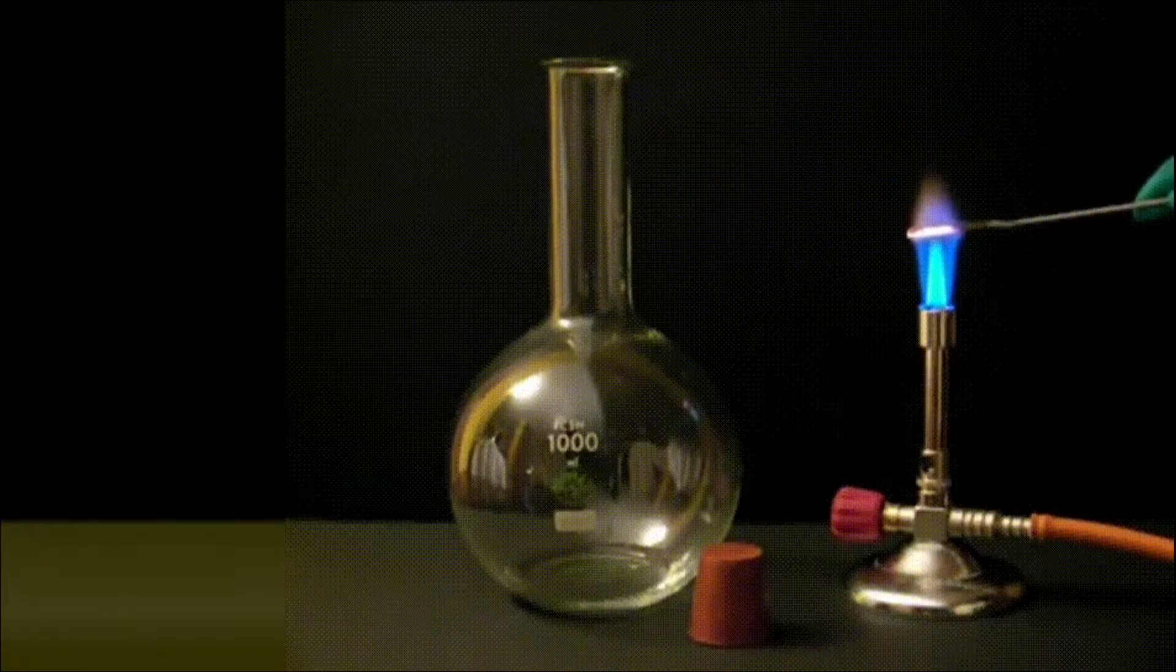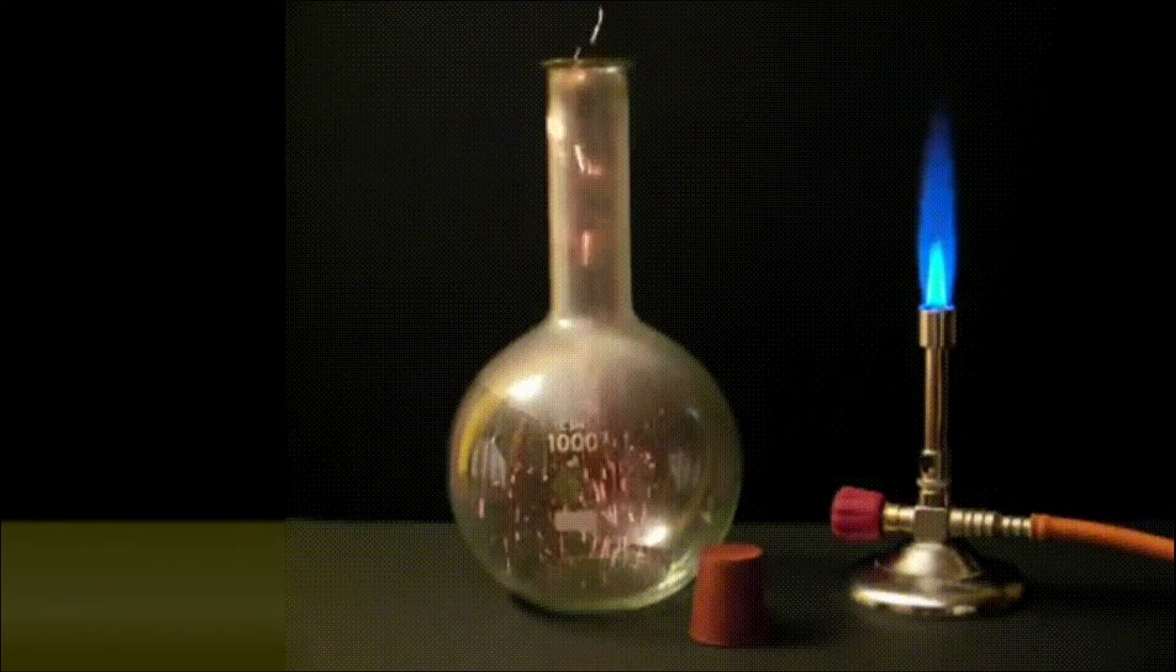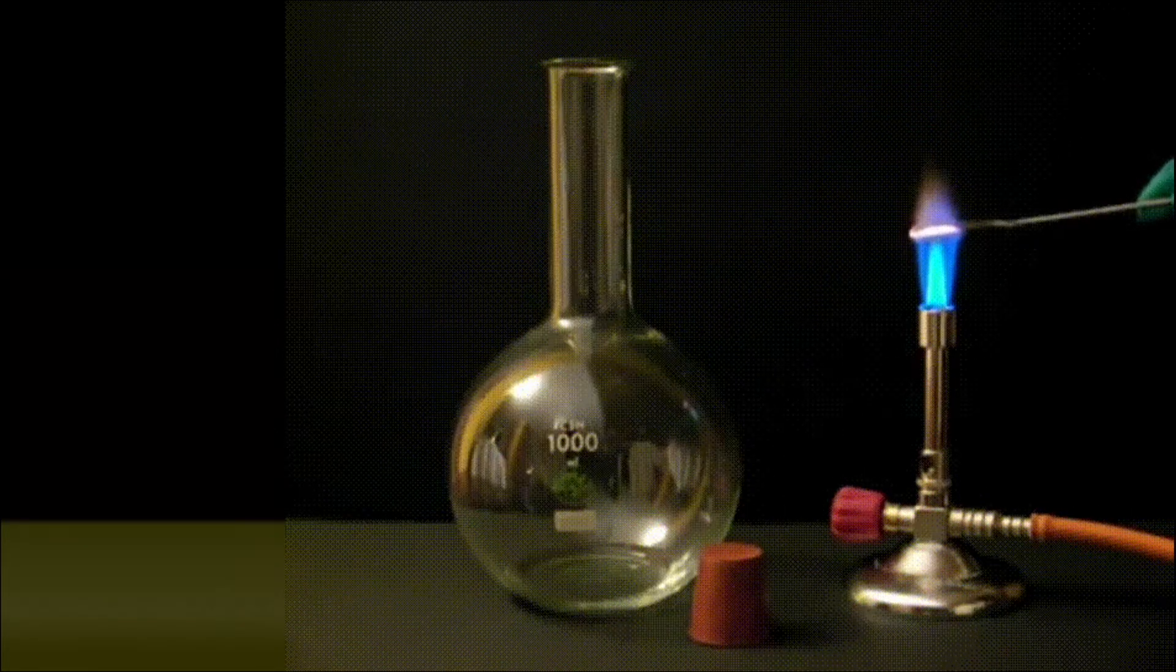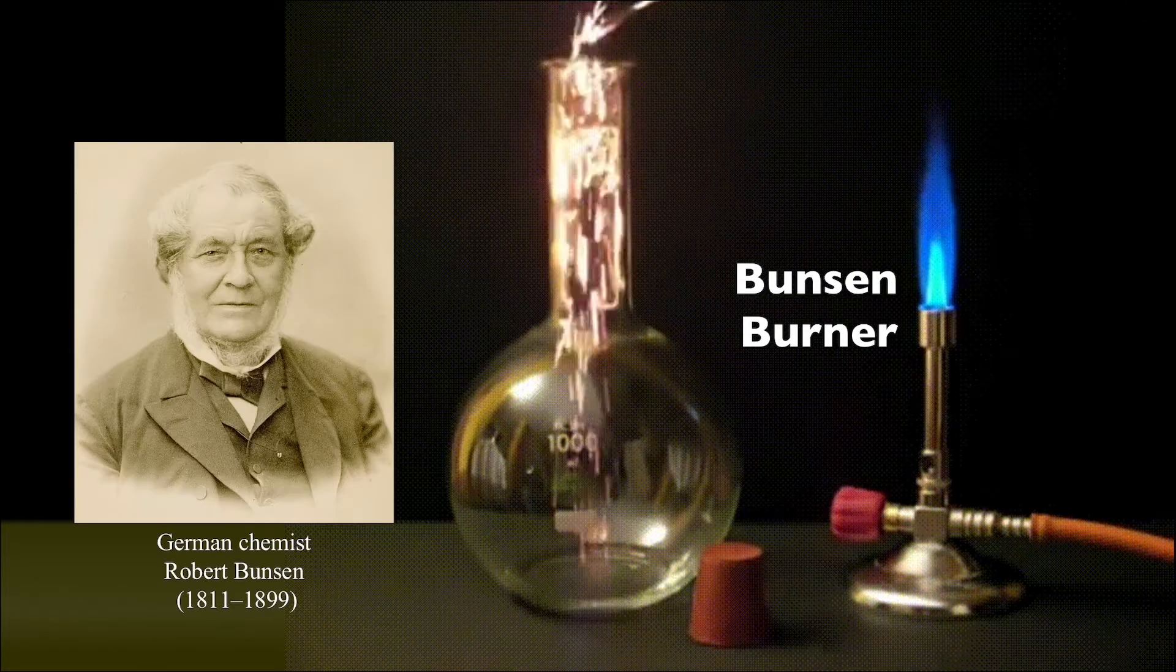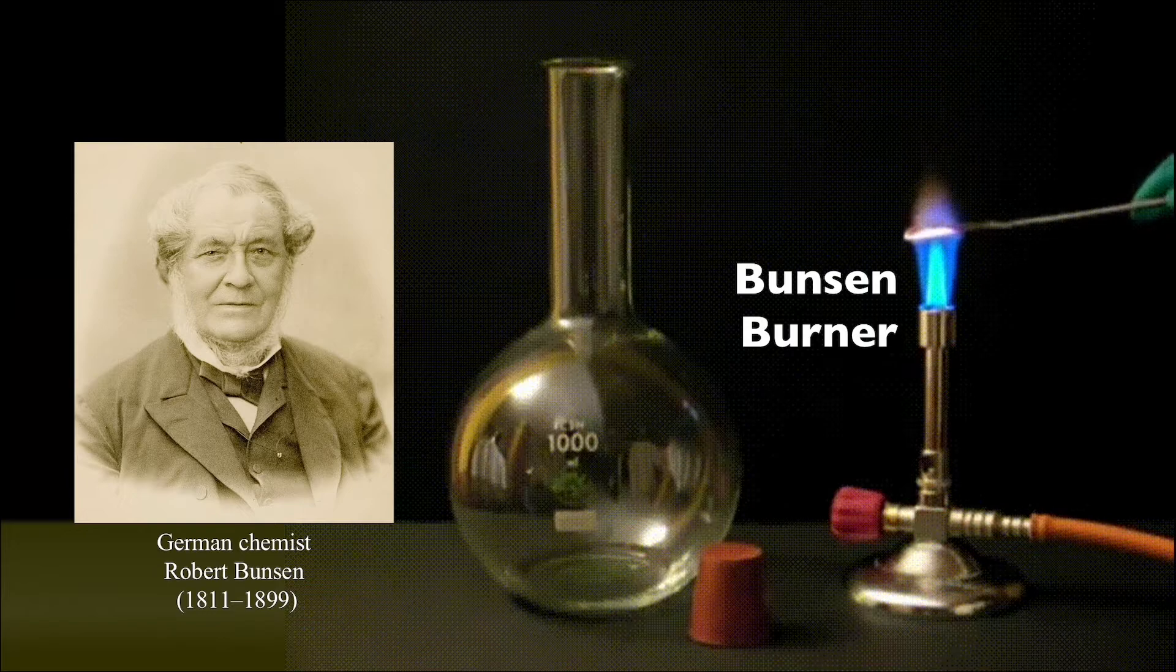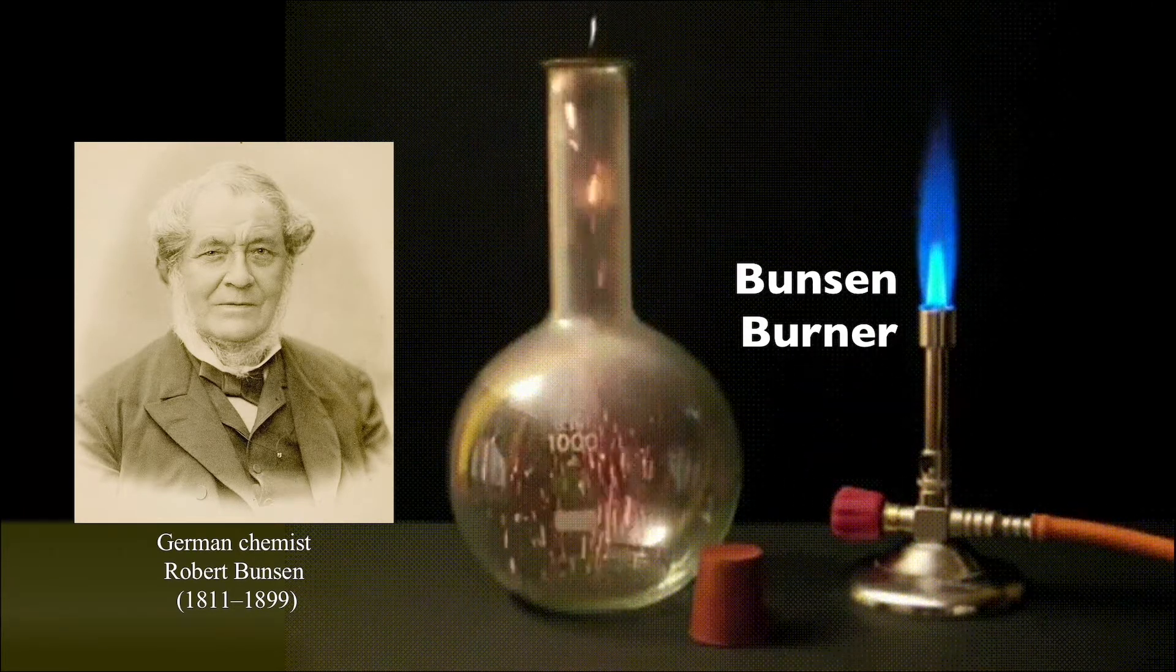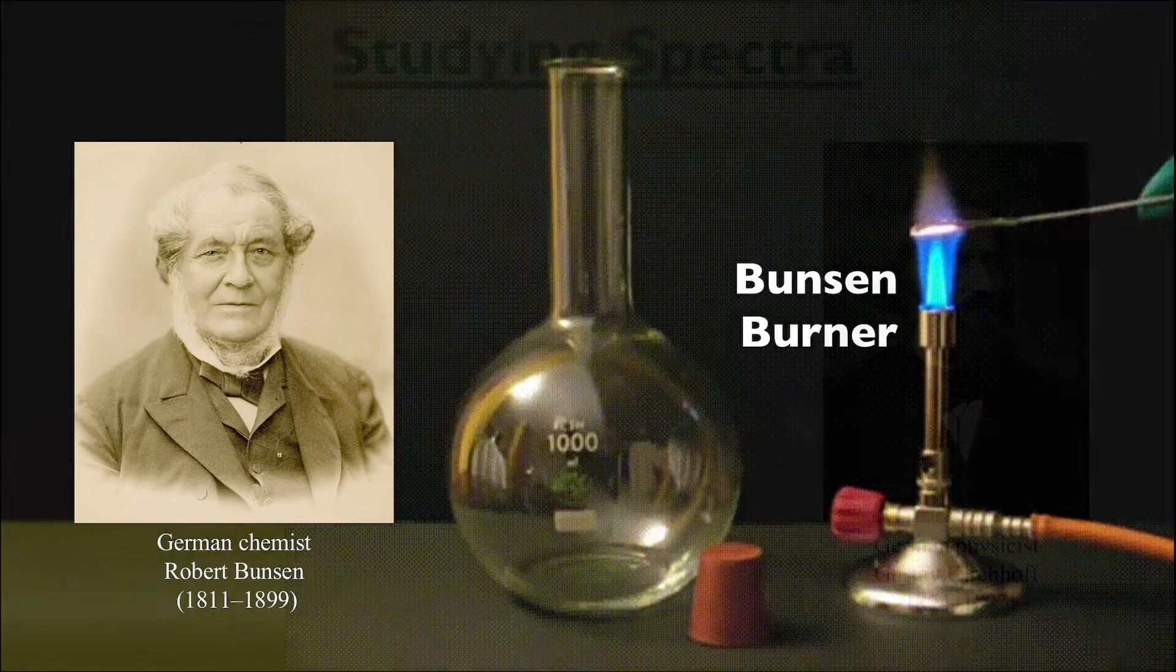If you recognize the instrument on the right providing the flame for this experiment, it's probably from a previous chemistry class that you've taken. This is the Bunsen burner, named after German chemist Robert Bunsen, which provides a steady, clean, and very hot flame that makes it an ideal piece of laboratory equipment. But why is it worth mentioning in the case of spectra?